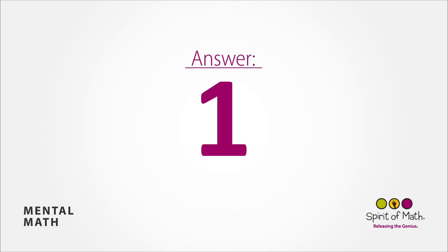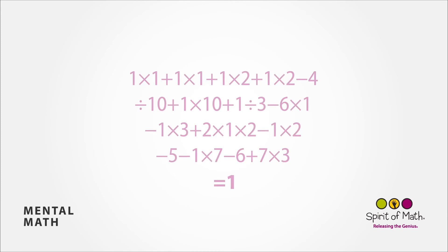And the answer is 1. Alright, starting at the beginning of the equation, you have 1 times 1, which is 1, plus 1 is 2. 2 times 1 is 2, plus 1 is 3. 3 times 2 is 6, plus 1 is 7, times 2 is 14.